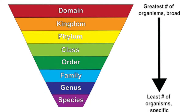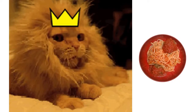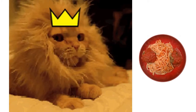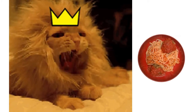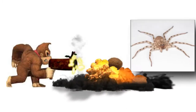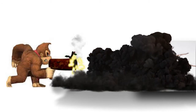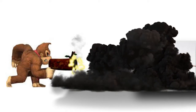Now if you have a hard time remembering that, there are some mnemonics. One I heard while studying was 'Dear King Peter Came Over For Great Spaghetti.' But I had a hard time remembering that, so I made my own: 'Donkey Kong Presses Coconuts On Freaky Giant Spiders.'